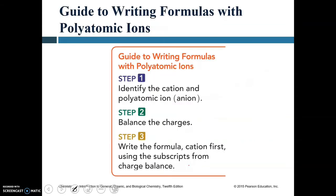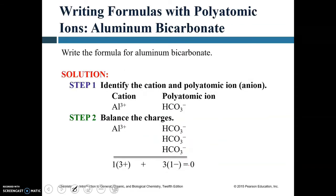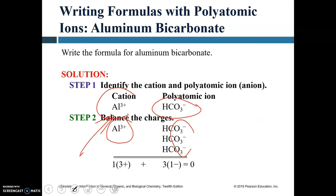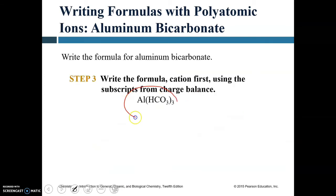For aluminum bicarbonate: the cation is aluminum with +3 charge; the polyatomic ion is bicarbonate HCO₃⁻. To balance three positive charges of aluminum with the -1 charge of each bicarbonate, you need three bicarbonate ions for each aluminum. The subscript 3 goes outside parentheses enclosing the polyatomic anion, giving Al(HCO₃)₃.